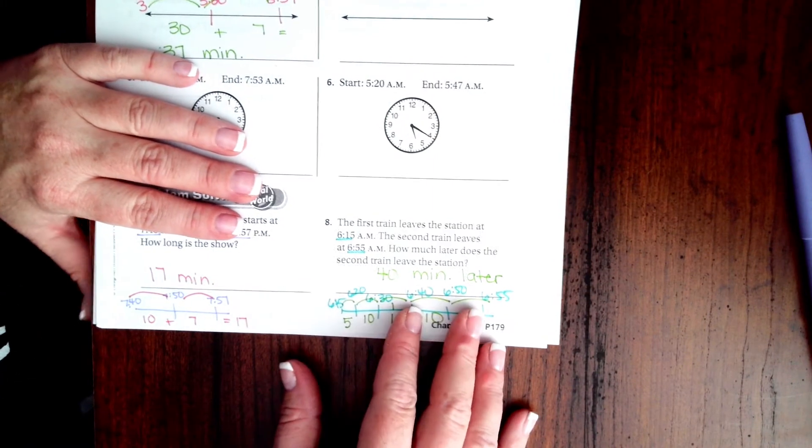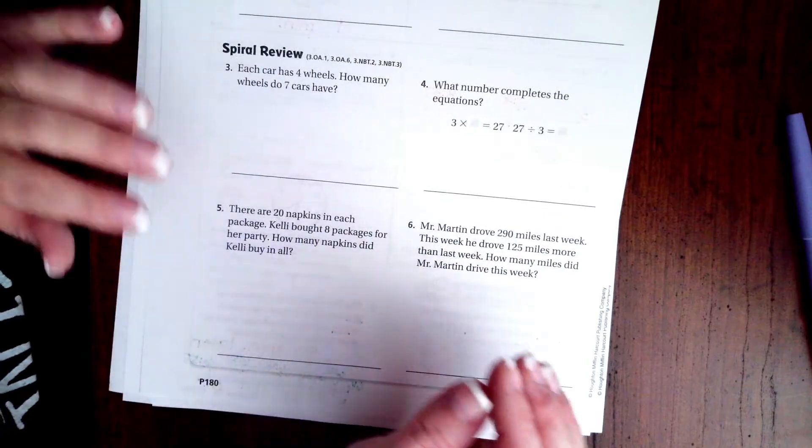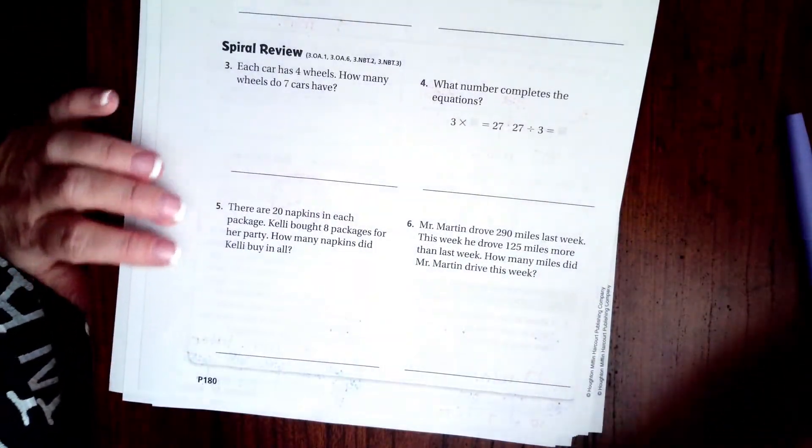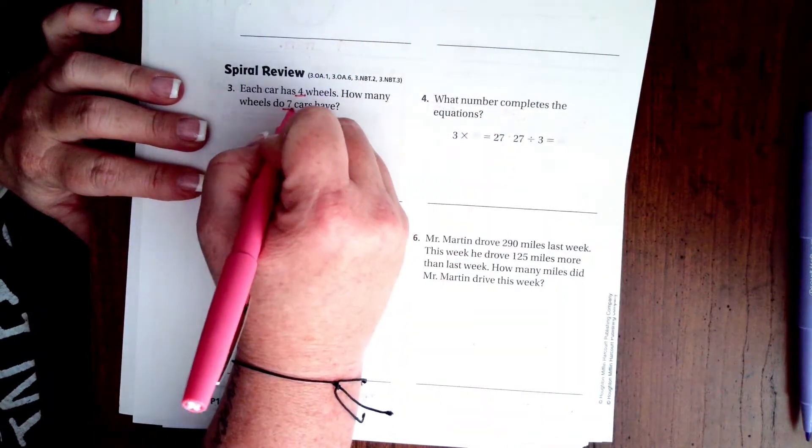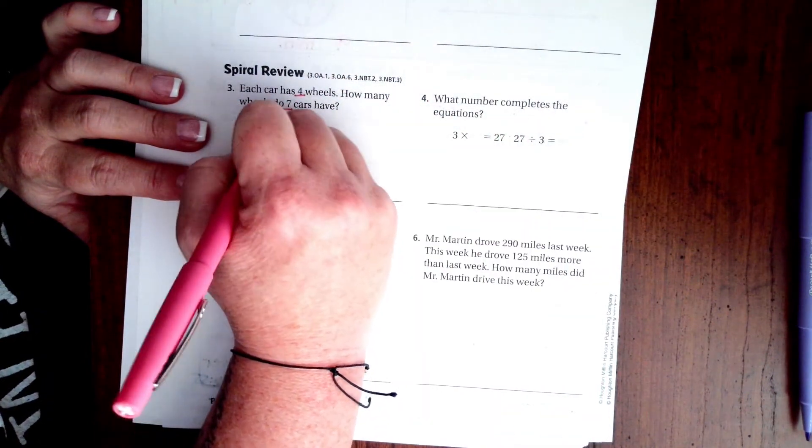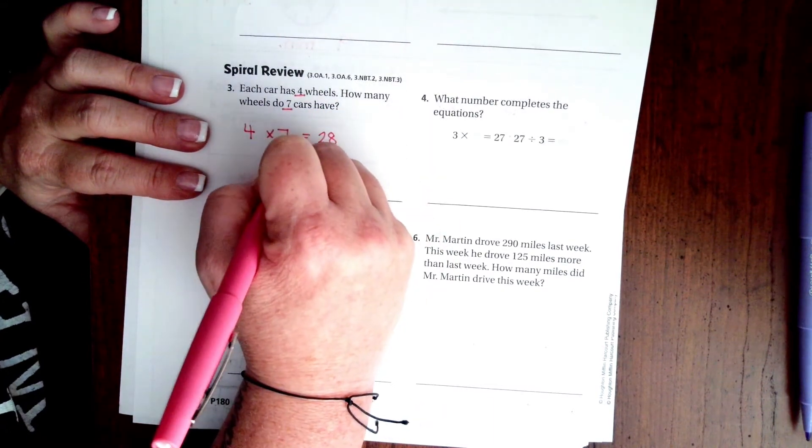All right, we're going to turn the page, we're going to go on to the back where you guys are going to do the lesson check just like always, and we're going to go down to this spiral review. It says each car has four wheels, how many wheels do seven cars have? Well four times seven, that's 28, so 28 wheels.